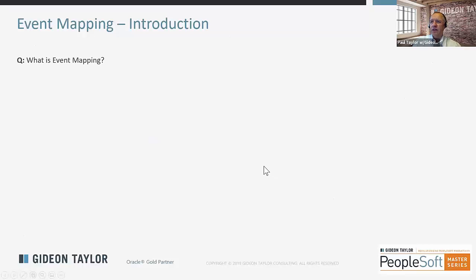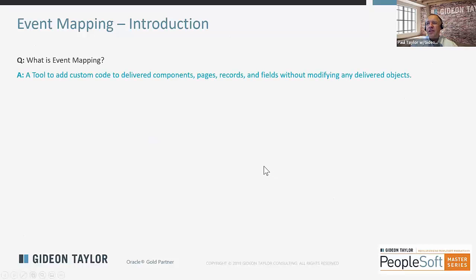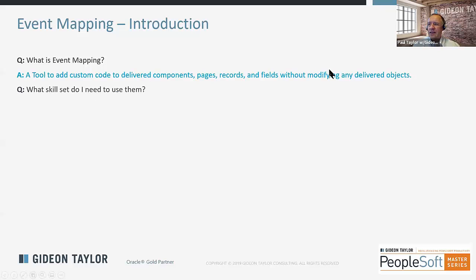So just a quick hit on event mapping — what is it? It's a tool to add custom code to delivered components, pages, records, and fields without modifying the delivered objects. The reason to do this is you want your custom behavior not to be impacted by upgrades. If you can encapsulate your custom behavior in configuration-based settings, then overriding those objects won't override your custom behavior.